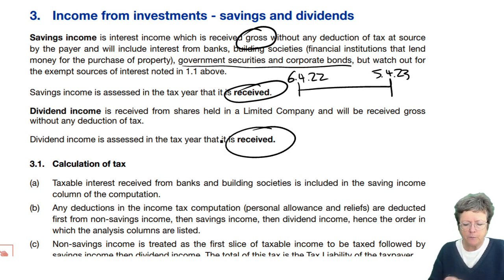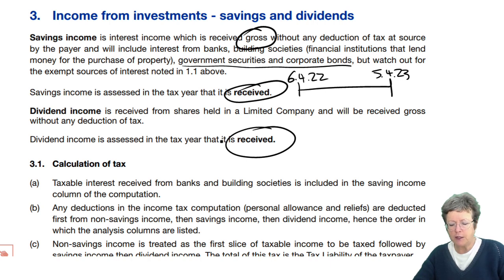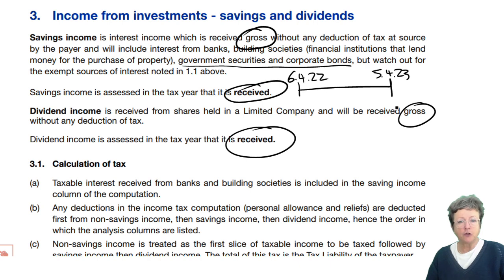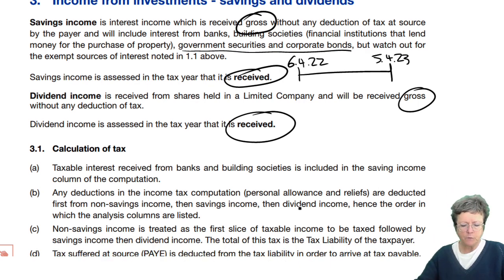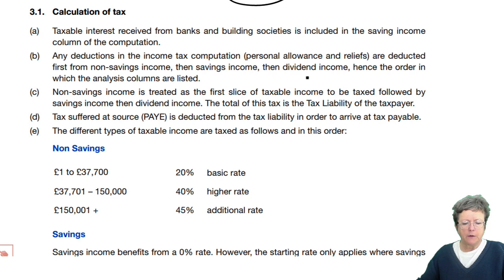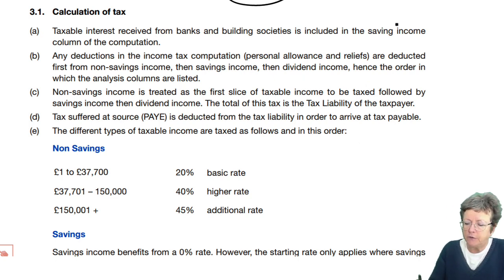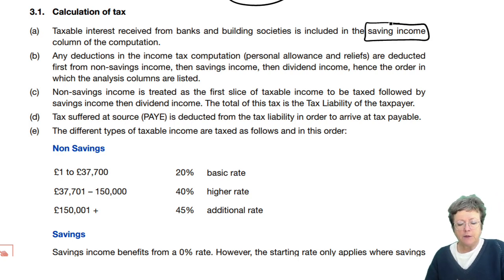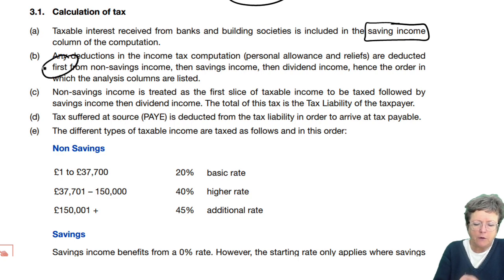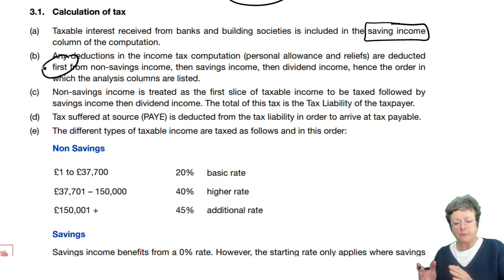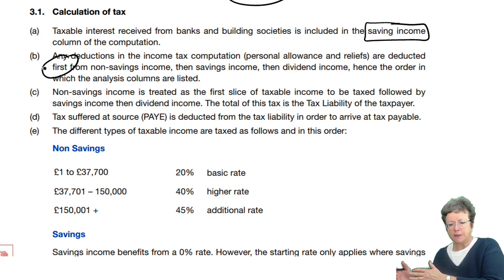Same with dividends. Dividend income is received from shares that are held in limited companies, and again, that is always received gross. Any deductions in the income tax computation — the personal allowances and reliefs — remember, always first from the non-savings income, then the savings, then the dividend, top slicing. And that's why you have the columns as they have.